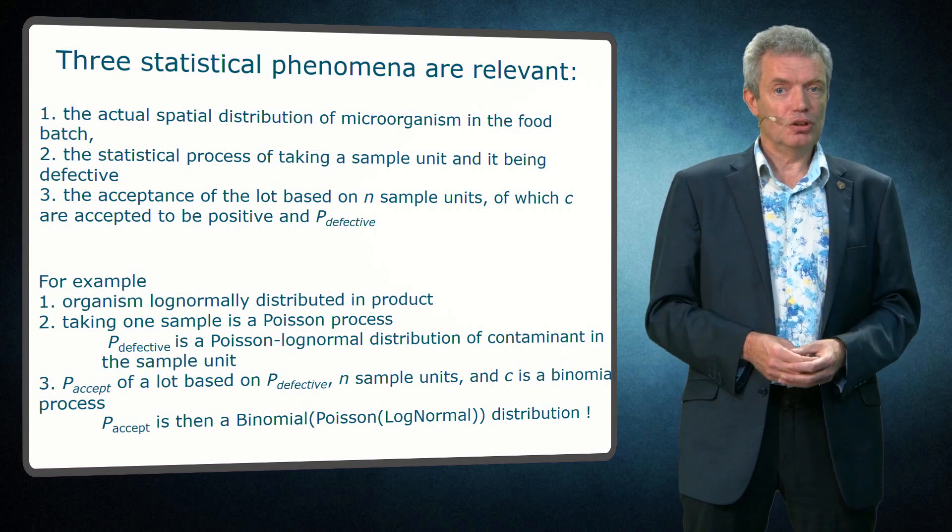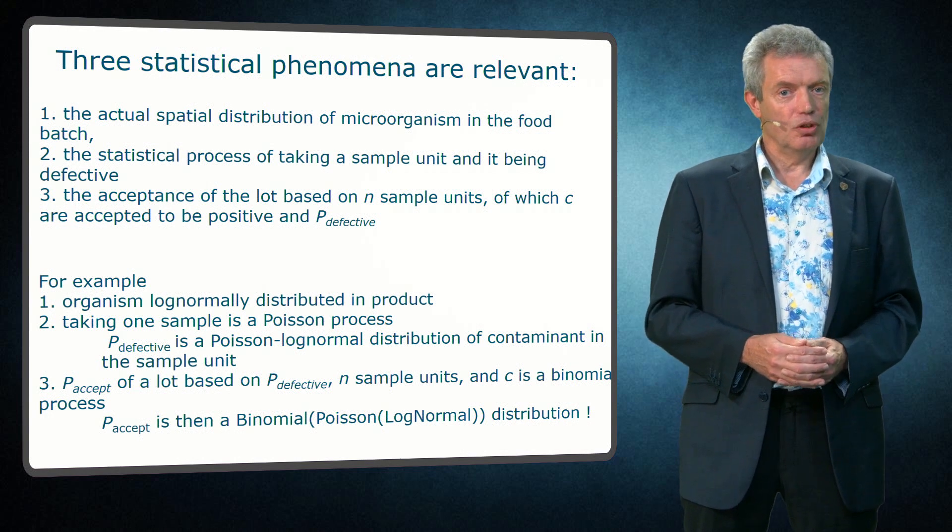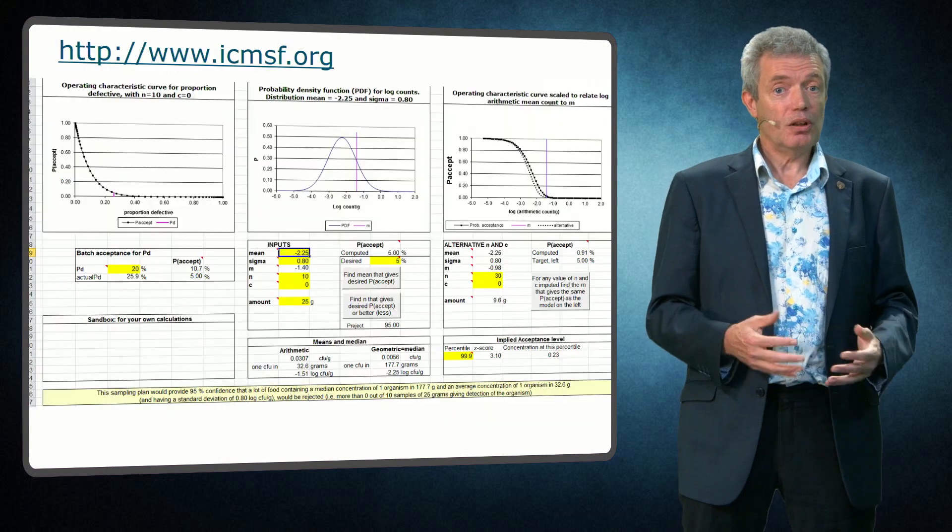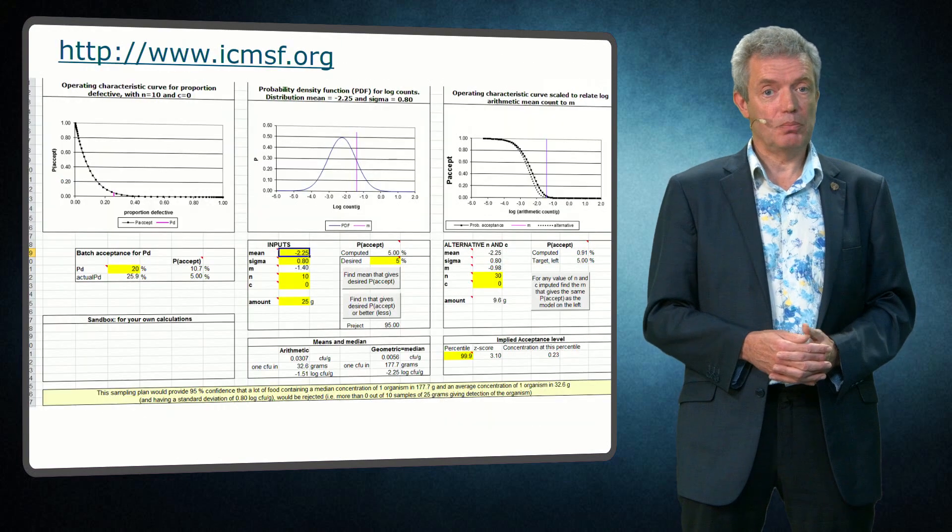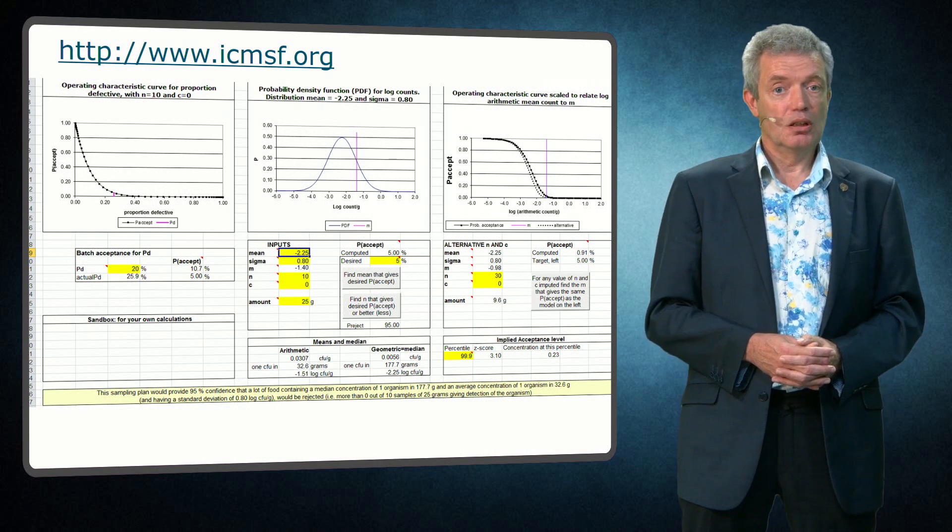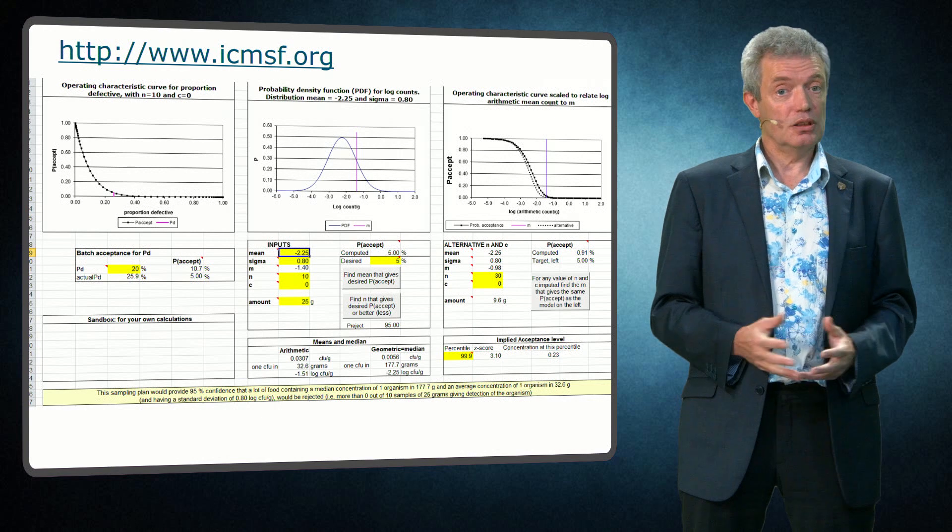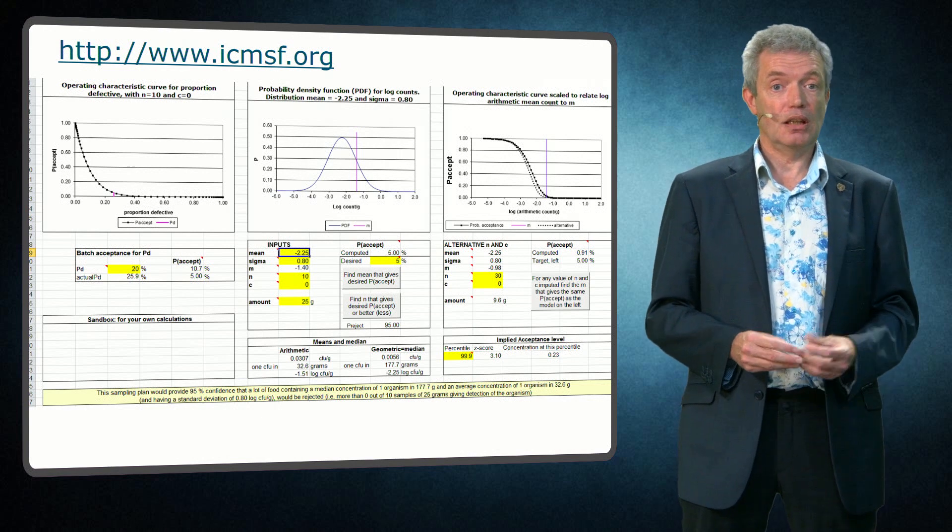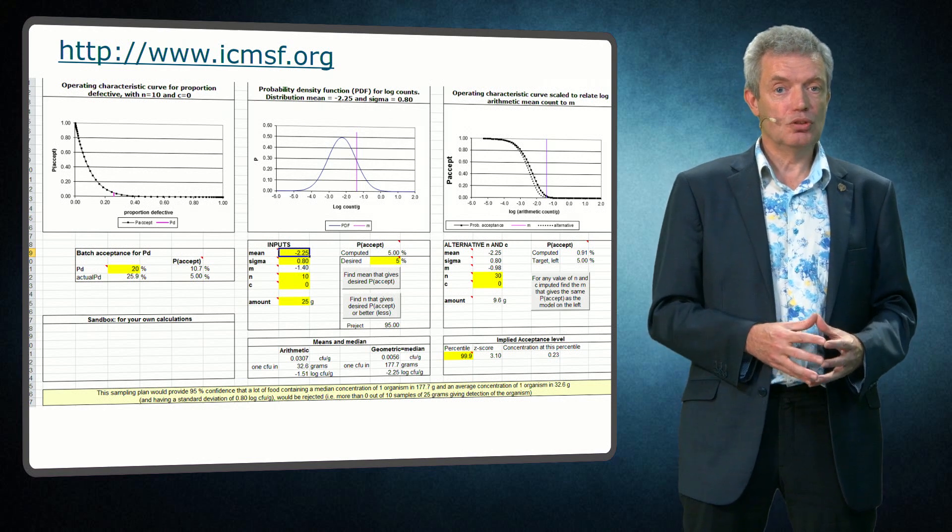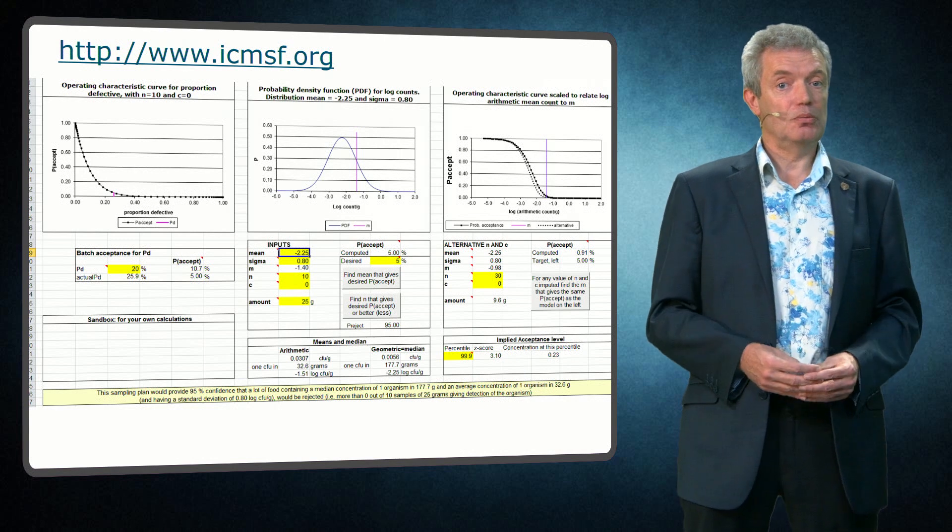While this is complicated, fortunately tools can help you to calculate these probabilities. But it is good of course to understand the basis of these calculations. One of these tools is the ICMSF sampling plan tool that can be found on the ICMSF website www.icmsf.org. Another tool is developed by the FAO-WHO, and yet another developed by the University of Cordoba from the baseline project. All these tools have similar approaches to handle the phenomena I have described today.